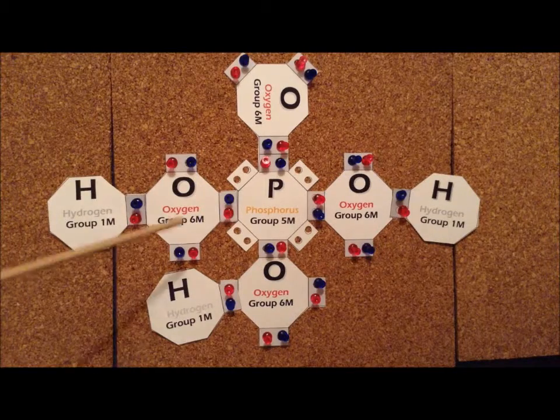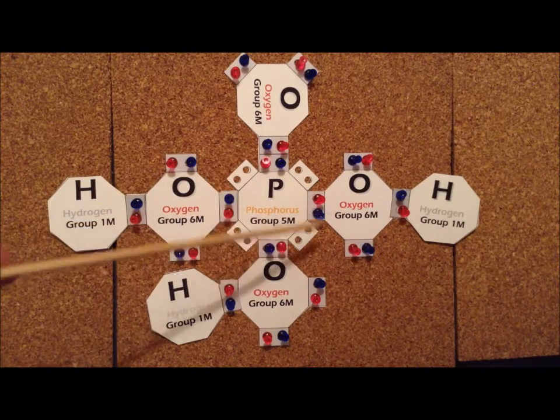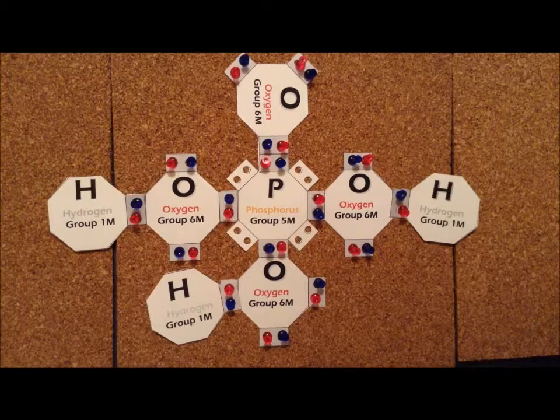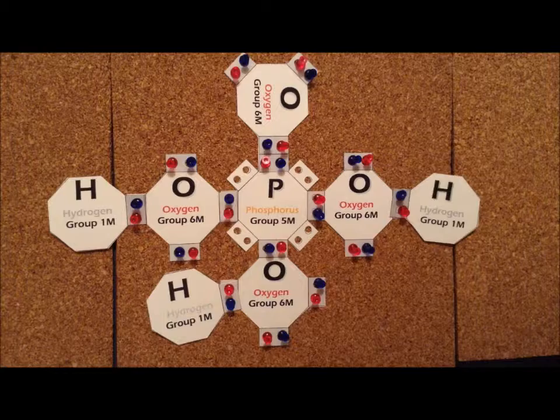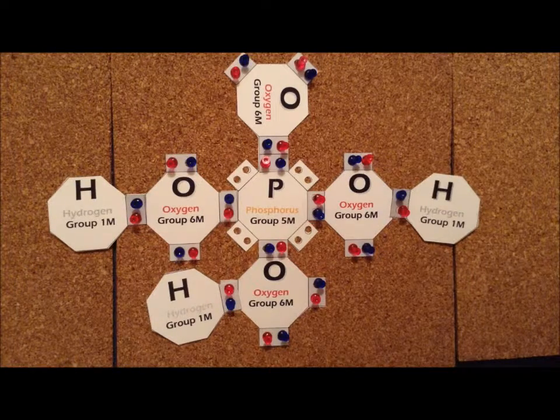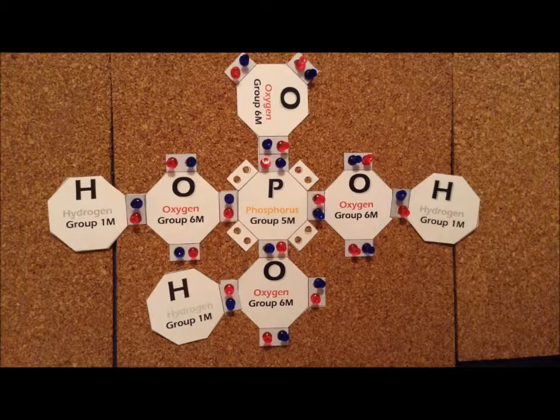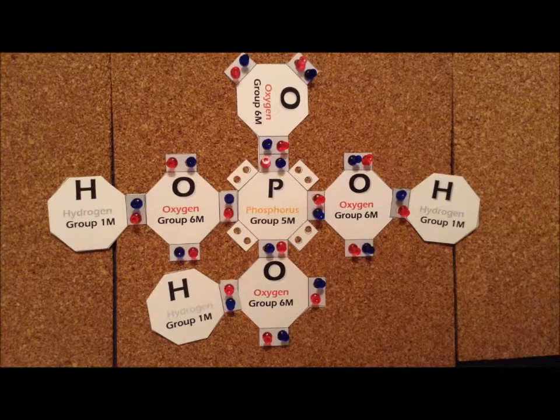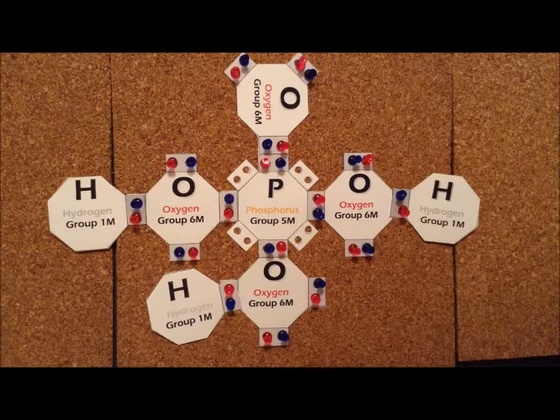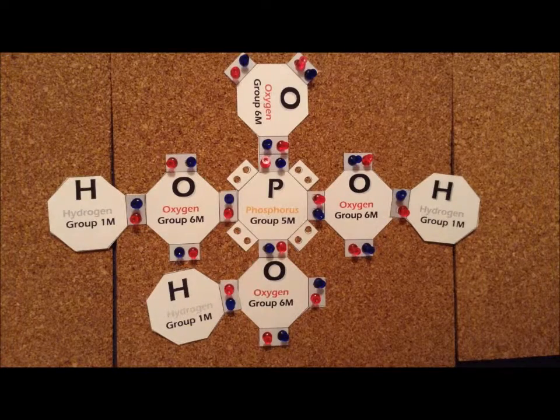As a result, the phosphorus atom in the center has two, four, six, eight, ten electrons, three sets from three single bonds, and then one set from a double bond. So, that gives us a total of ten electrons around the phosphorus, which is allowed because the phosphorus is in the third row, so therefore we can expand the octet.